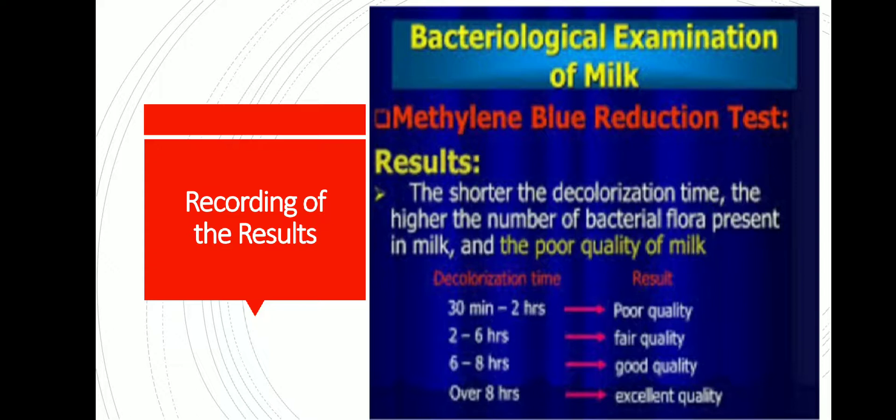2 to 6 hours decolorization time gives fair quality of the milk. The decolorization time between 6 to 8 hours gives good quality of the milk. And if the decolorization is after 8 hours, this is excellent quality of the milk.